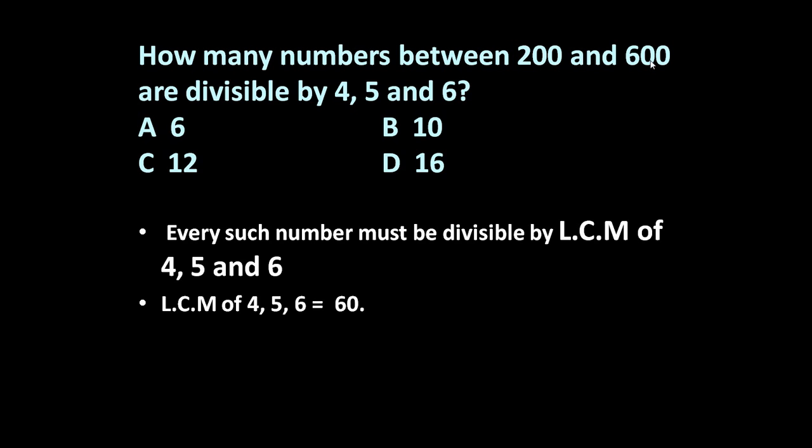So the number which is divisible by 60 and between 200 and 600 will be divisible by 4, 5, and 6 respectively. If we see 200, 600, and the numbers which are multiples of 60, they are 240, 300, 360, 420, 480, and 540.